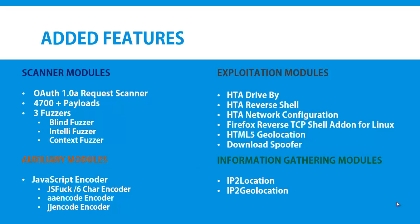In auxiliary modules we have a new feature called the JavaScript Encoder. It allows you to encode JavaScript into three different formats. We have three different encoders: JSFuck or 6-star encoder, then AA encoder, and then JJ encoder.